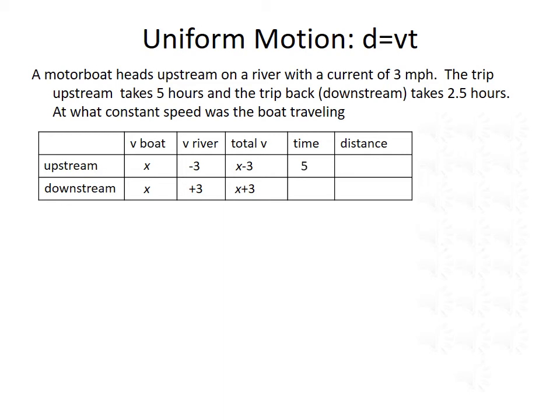We were told it takes five hours for the upstream trip and only two and a half hours for the downstream trip. We can find distance by multiplying time times velocity. So the distance for the upstream trip will be five times X minus three, and the distance for the downstream trip will be 2.5 times X plus three. Since the trip upstream and downstream covered the same distance, we can form an equation by setting these two equal: five times X minus three equals 2.5 times X plus three.